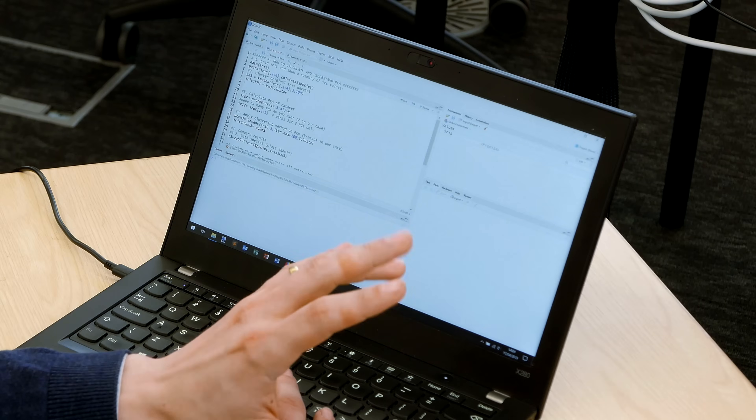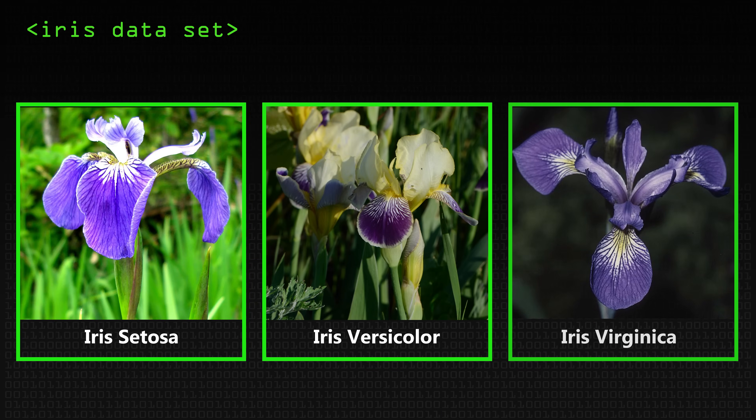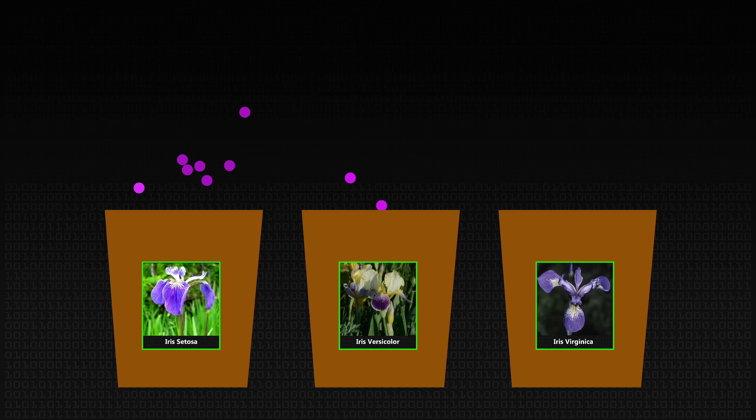It wouldn't be a data analysis course if we didn't look at the iris data set at least once. This is a classic data set everyone uses — it's good for clustering, nice and small. In this data set we've got three different species of flower: Setosa, Versicolor, and Virginica. We've got four attributes: sepal length, sepal width, petal length, and petal width. I looked up what a sepal is — it's the green bit that covers the flower when it's folded up. One of the species is a little bit more different than the others, so they make for a good clustering problem because we're hoping for three distinct clusters. The iris data set is built into R — you can literally call data iris and it'll load for you.